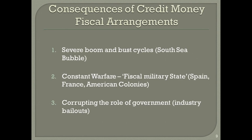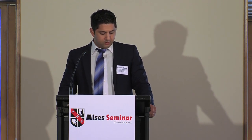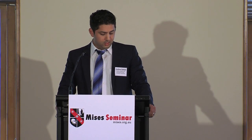The second consequence was that the system of credit money allowed the United Kingdom to embark on nearly a century of warfare — from Spain to France to the American colonies — as England became what some scholars called a fiscal military state. And finally, the system of credit creation was corrupting the role of government. By the end of the 18th century, British industry was putting out its hands in search of government bailouts and subsidies. Politicians were closely aligned with commercial interests and money was being doled out to prop up struggling sectors. Severe booms and busts, constant warfare and bailouts — does that all sound familiar?